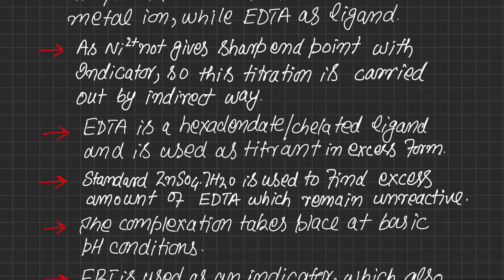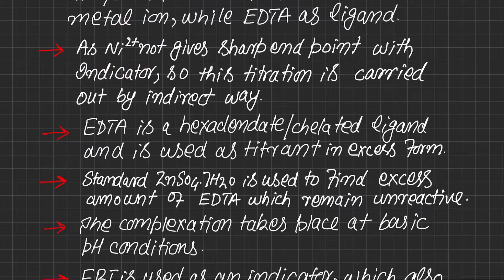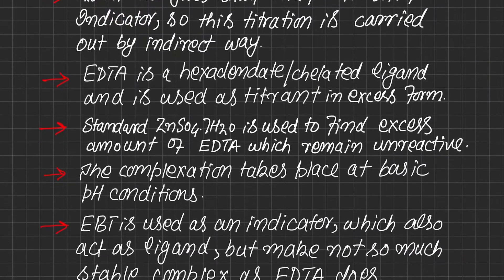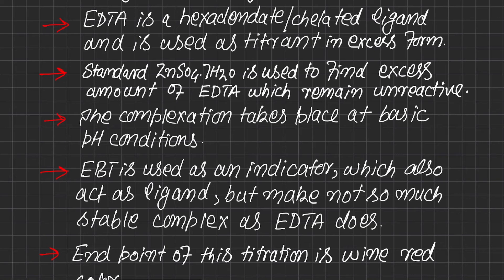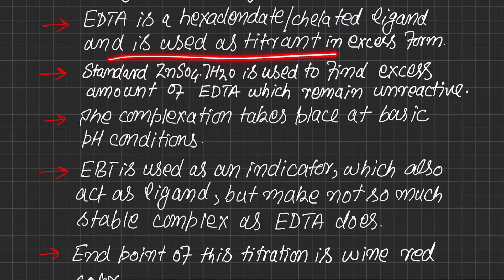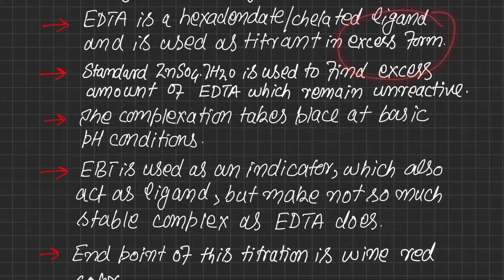Usually the analyte gives a sharp endpoint or color change with the indicator, but nickel does not give that sharp change in color with EBT. So we are using an indirect approach. EDTA is a hexadentate chelated ligand and is used as titrant, but this titrant is used in excess form.